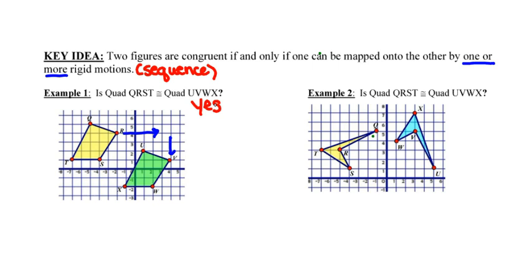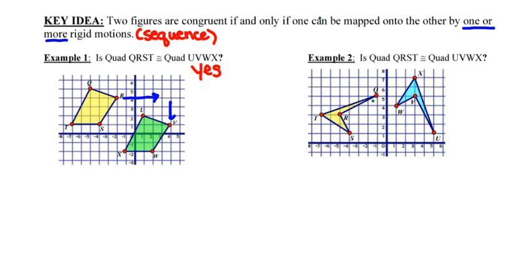And as far as the justification piece for that, I need to now go talk about a rigid motion that will map one onto the other. I'm going to write using function notation, but you're more than welcome to write using sentences. So a translation of six units to the right and three units down of quadrilateral QRST maps onto quadrilateral UVWX. Notice I've named my transformation, I've named my input, and I've named my output. That's really important because we could have done a transformation of the green figure onto the yellow one. It doesn't specify which is the pre-image and which is the image.